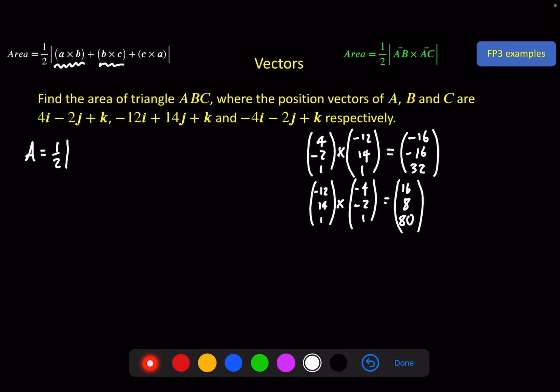And then the last one, c cross a. So we've got -4, -2, 1 cross 4, -2, 1. Top one, zero. Middle one, 4 minus -4 is 8. And the bottom one is 8 minus -8, 16. That's this one.